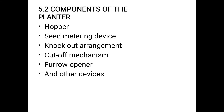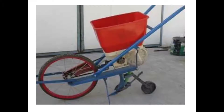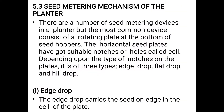Components of planter: hopper, seed metering device, knockout arrangement, cut-off mechanism, and furrow openers and other devices. Seed metering mechanism of planter: there are a number of seed metering mechanism devices in a planter, but the most common device consists of a rotating plate at the bottom of the seed hopper. The horizontal seed plate has suitable notches or holes called cells. Depending upon the type of notches on the plates, it is of three types: edge drop, flat drop, and hill drop.